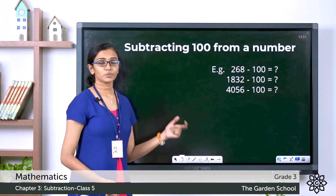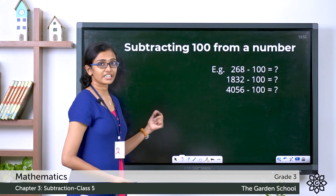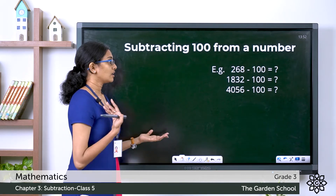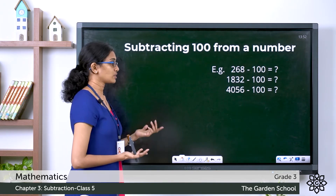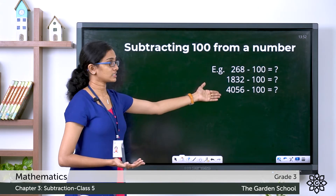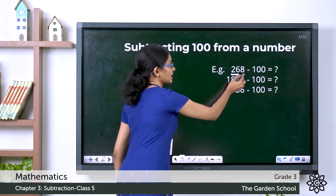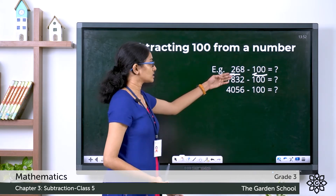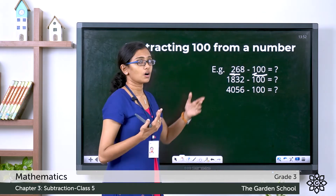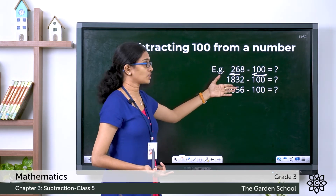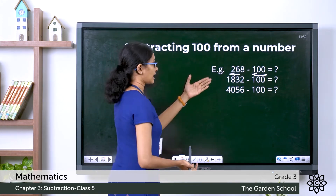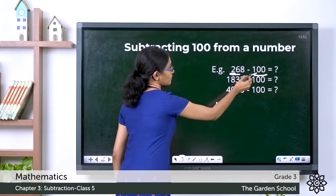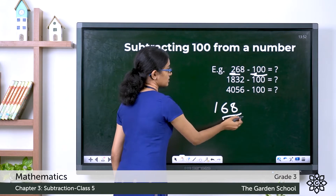Now, if that was the case with number 10, let's see the case with number 100. Take 268 minus 100. From the examples we saw with subtraction of 10, can we write the answers easily? The hundreds digit here is 2 and in the subtrahend it is 1. Since this is greater, only the digit in the hundreds place should change. So the answer for 268 minus 100: 2 minus 1 is 1, giving us 168.